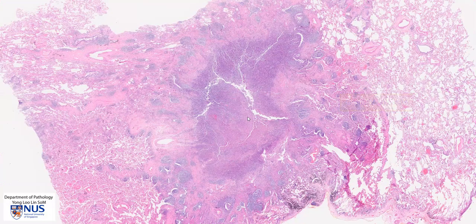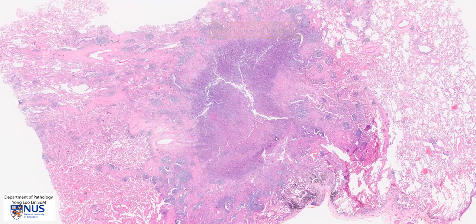An abscess is essentially a localized area of suppurative inflammation. So we expect to see the components of suppurative inflammation: namely necrotic debris, lots of neutrophils, and sometimes the causative agent, which is very often bacterial organisms.